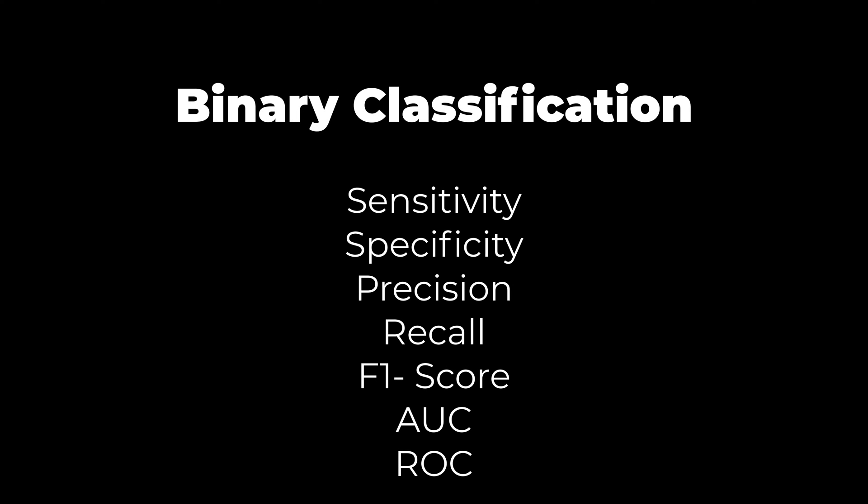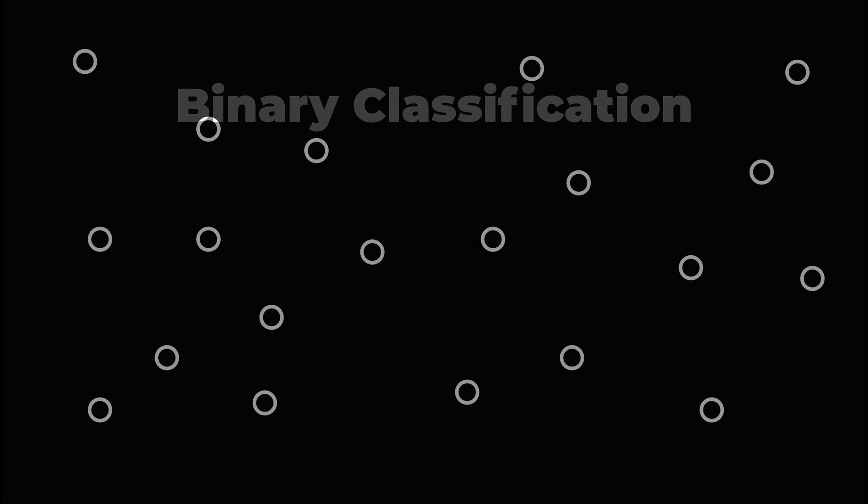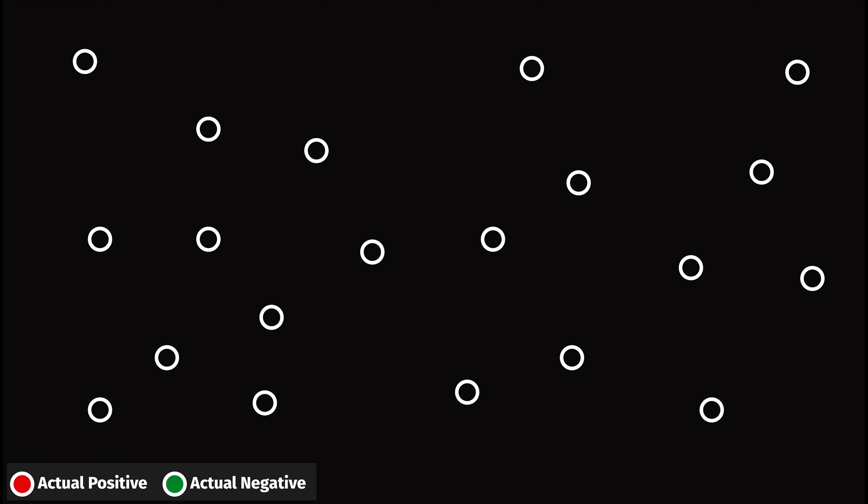Binary classification models have a host of terminology to describe their effectiveness. Consider a simple binary dataset of many items, each of which falls into one of two classes. You can always think of these two classes as positive and negative. We label all of the positive results as red and all of the negative results as green. This labeling is the reality of the underlying data before models make predictions.